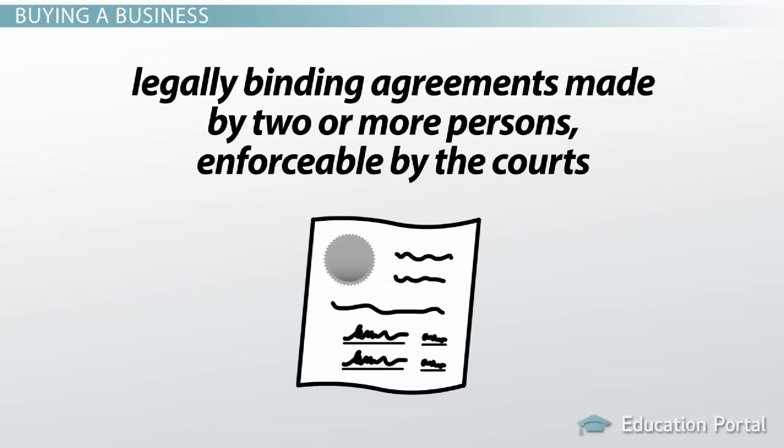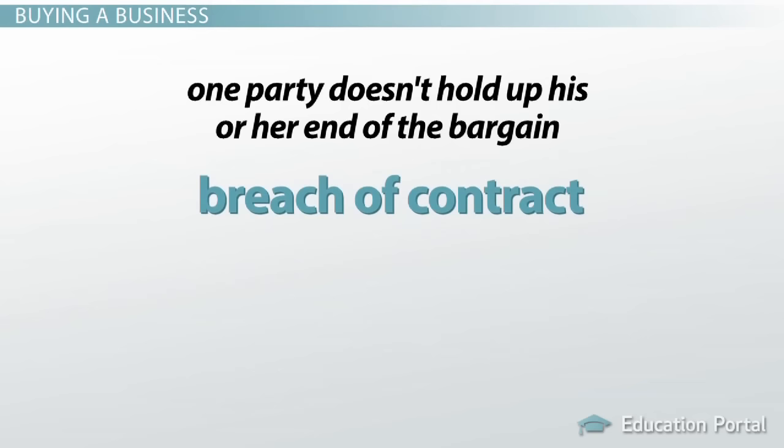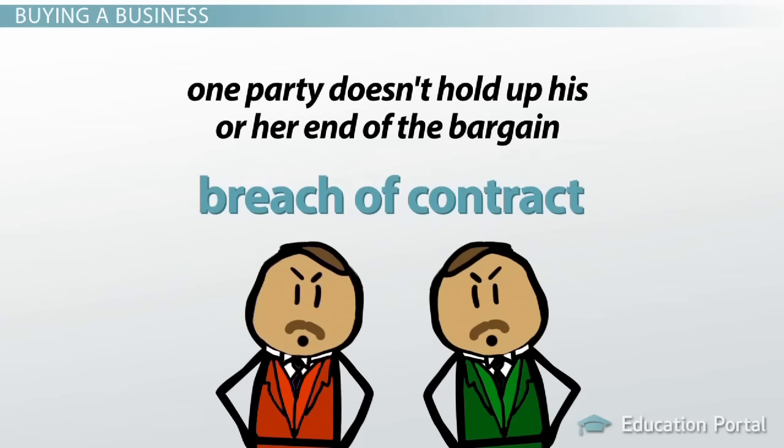Contracts are legally binding agreements made by two or more persons, enforceable by the courts. Businesses are involved in many different types of contracts, and as a result, there are many interesting cases involving breach of contract. A breach of contract is when one party doesn't hold up his or her end of the bargain. It's common for parties to dispute the terms of a business agreement, or disagree on how the agreement should be performed.